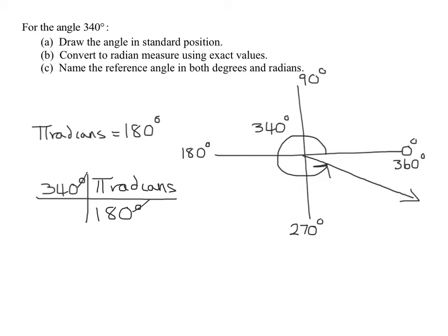My degrees cancel out, and I'm going to end up with 340 pi over 180. And since we want the exact value, we're just going to reduce this. So divide both by 10, I get 34 over 18. And I think both of those are divisible by 2. So 2 goes into 34 seventeen times. So I'm going to get 17 pi over 9. So that is the exact radian measure of my angle.